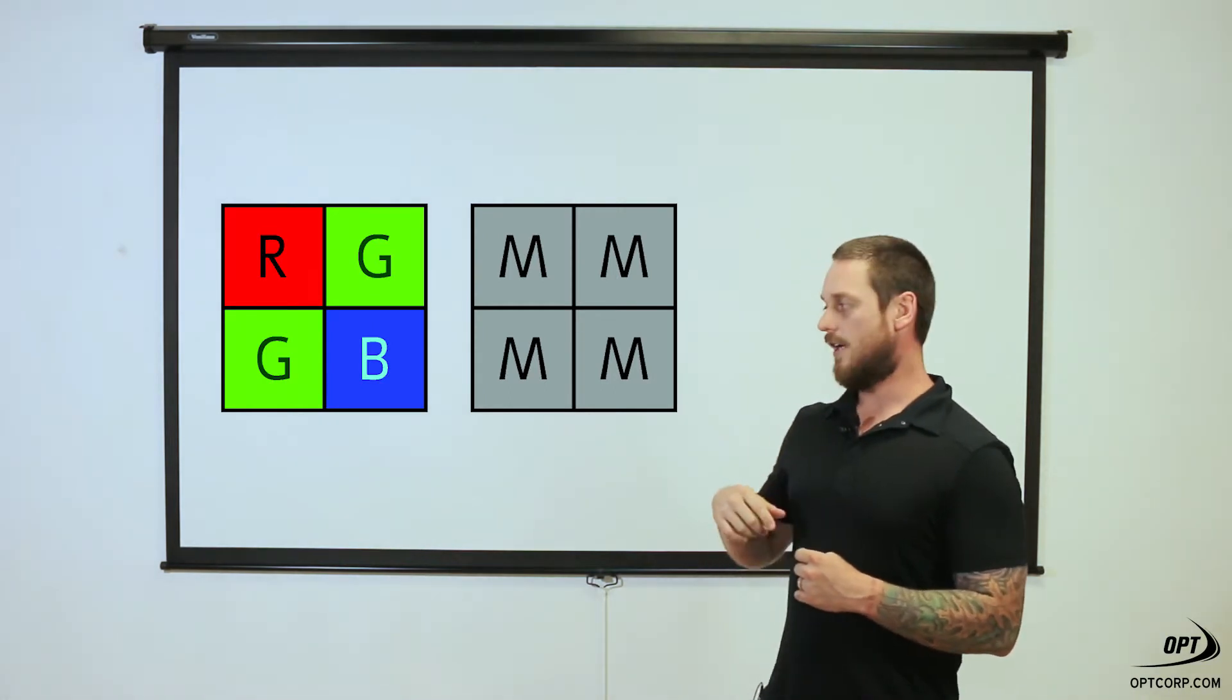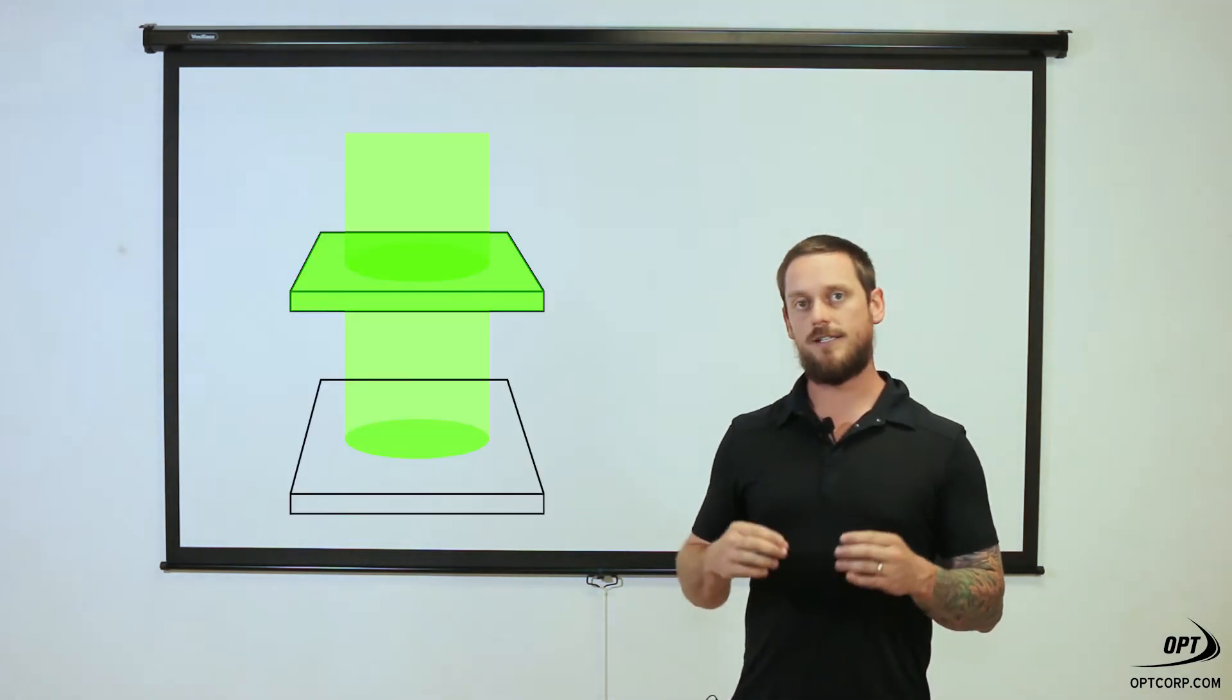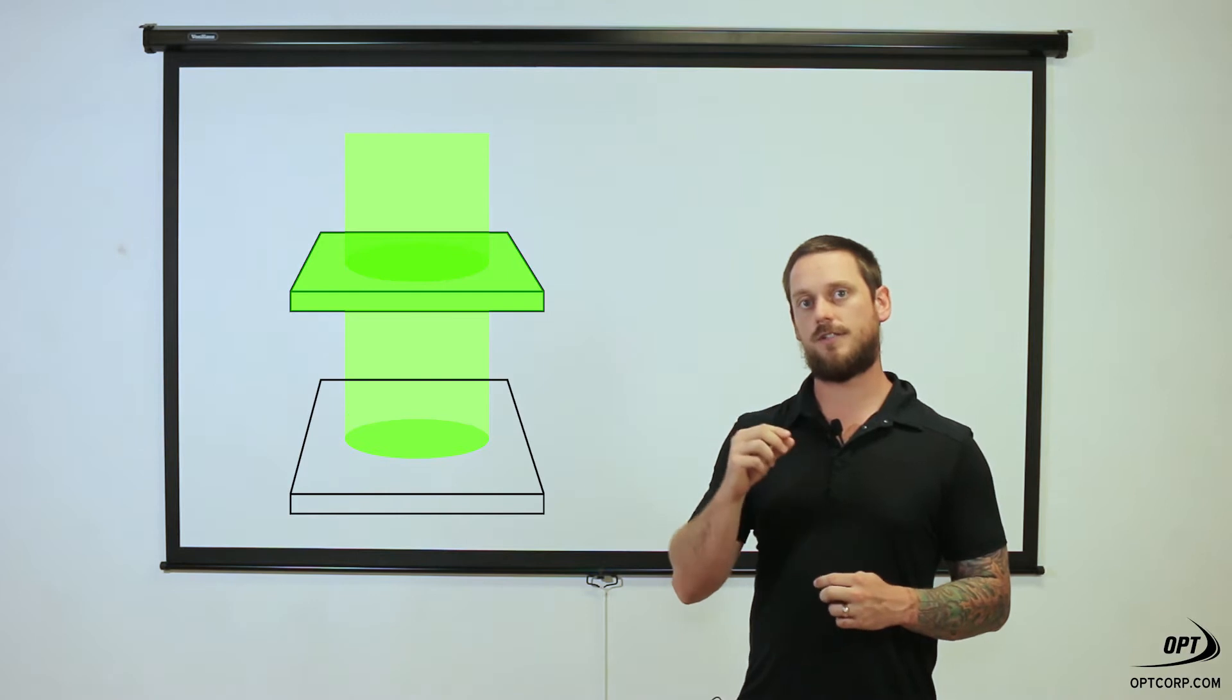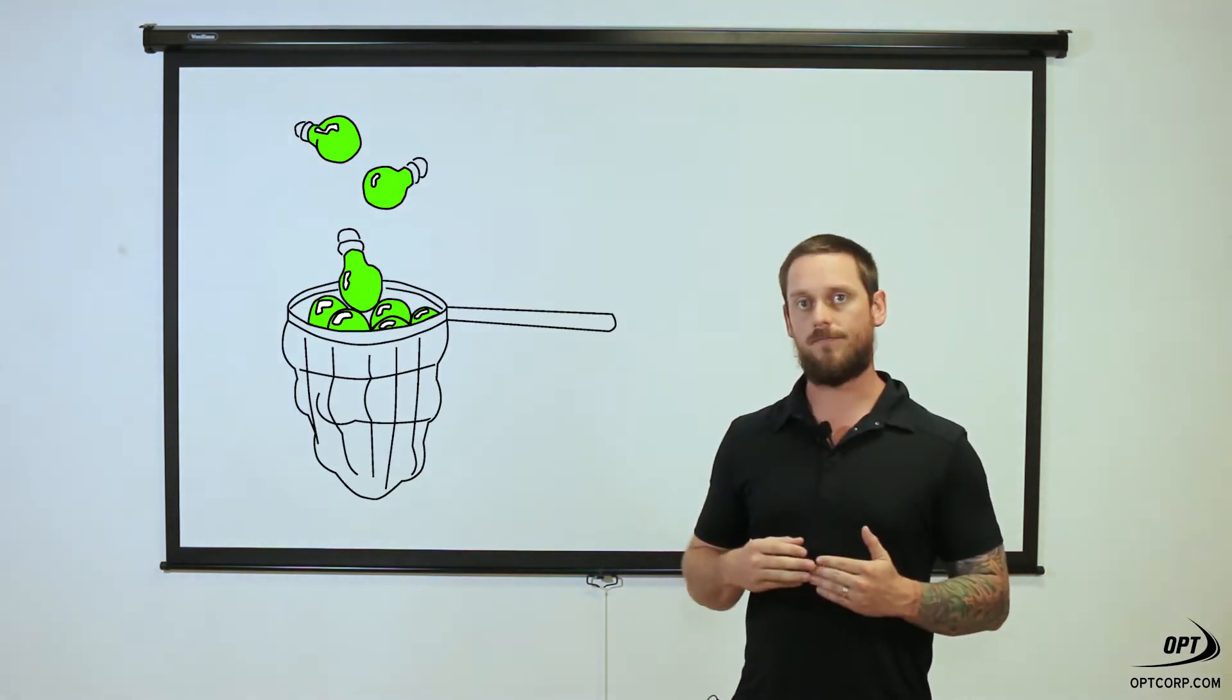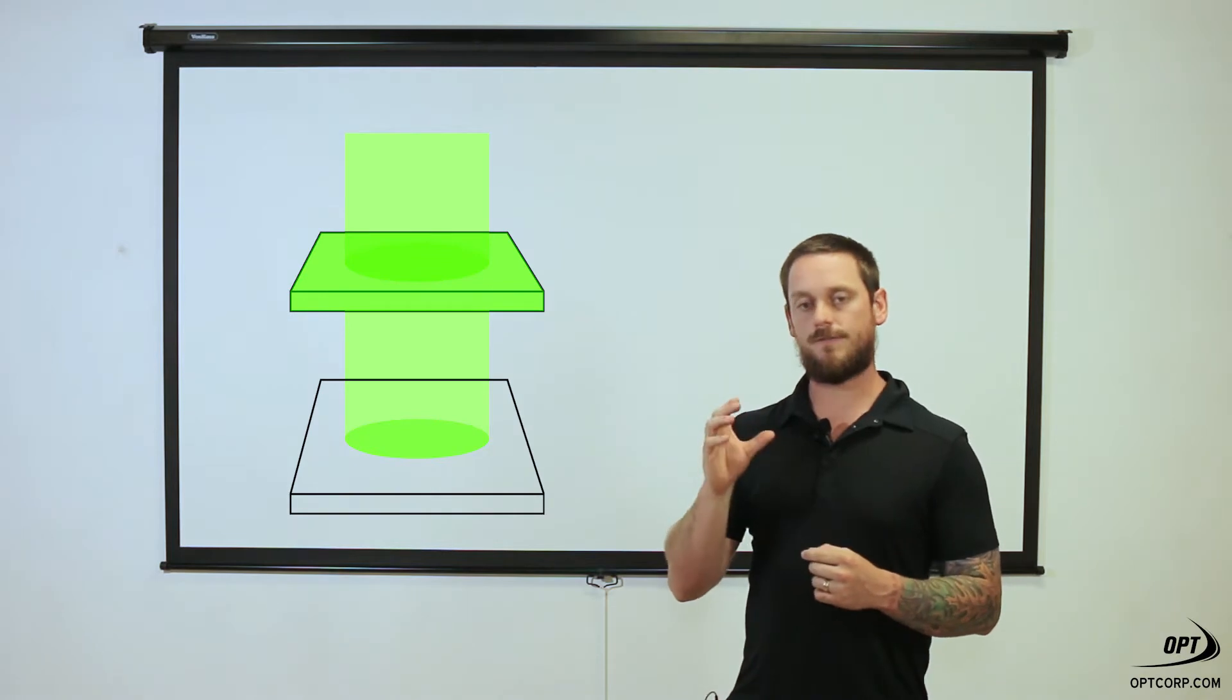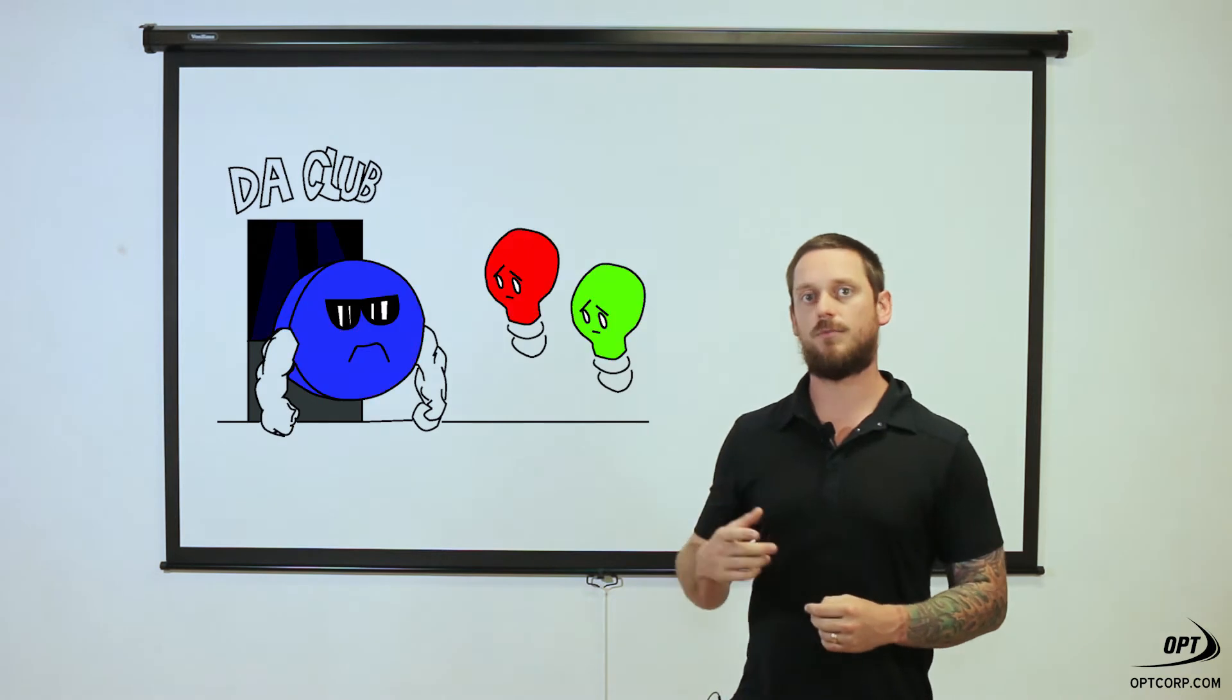You have an RGGB pattern on the color sensor. That's red, green, green, blue. And these are literally filters over every single pixel that's going to capture a specific wavelength of light. When you see a green filter on it, that's going to keep everything out except for the green light. Same thing with red and blue.